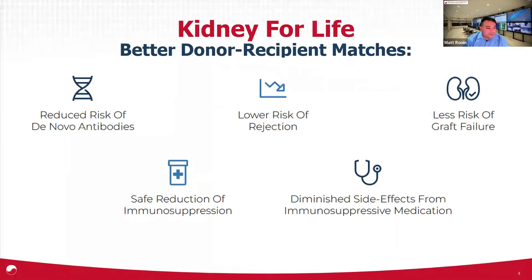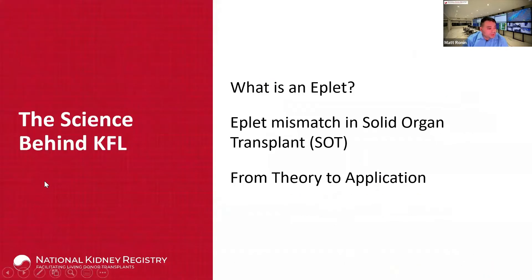The Kidney for Life initiative's primary goal is better donor and recipient matching. The goal is to reduce the risk of de novo antibodies, lower the risk of rejection, leading to less risk of graft failure. One of the side benefits is also the potential for safe reduction of immunosuppression and diminishing the side effects from that immunosuppressive medication. I'd like to turn the call over to Massimo Mangiola from the NYU lab to talk about the science behind the Kidney for Life initiative.